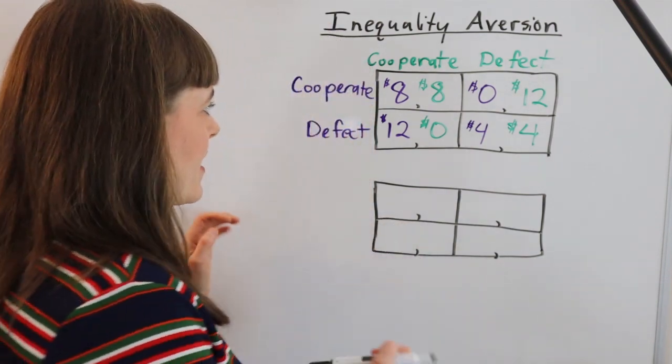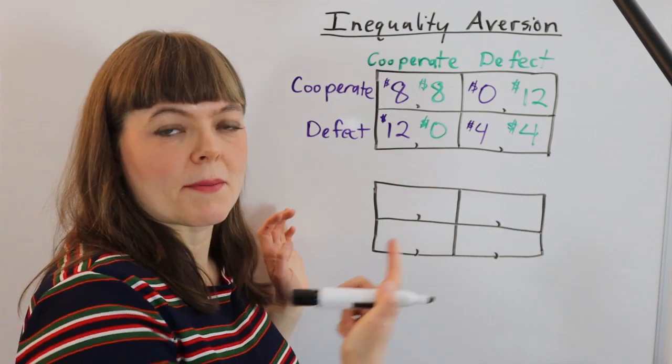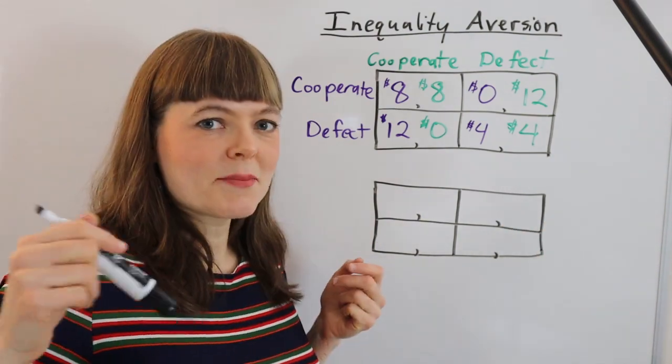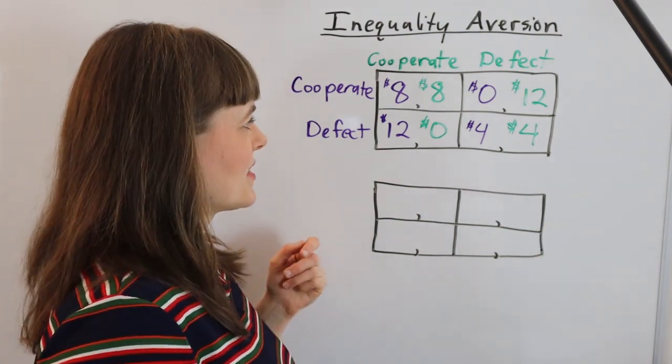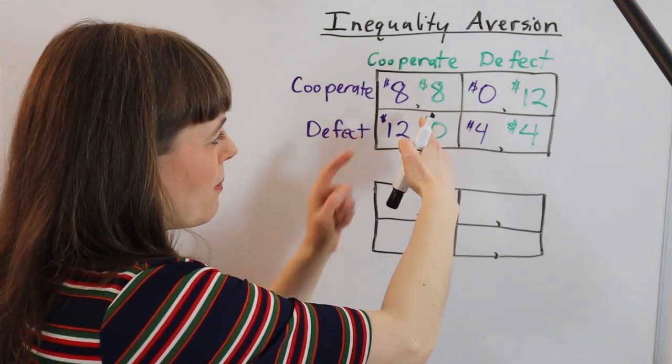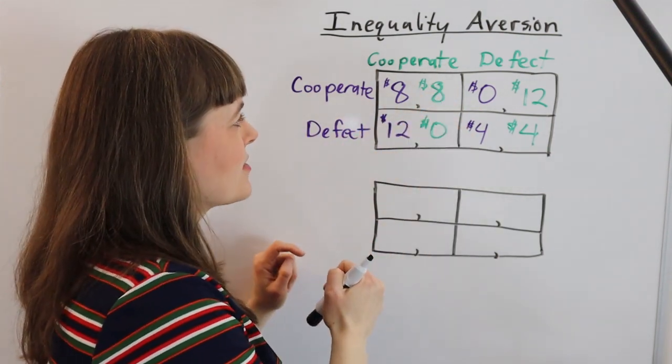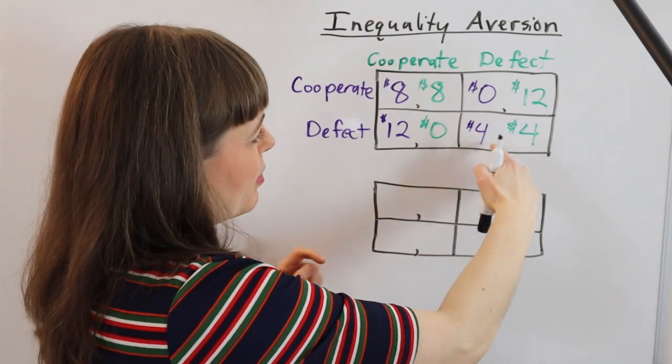The way to think about this is to imagine a prisoner's dilemma, which I've set up, where economists are running an experiment. In the experiment, if both people cooperate, they both get $8. If both people defect, they both get $4.